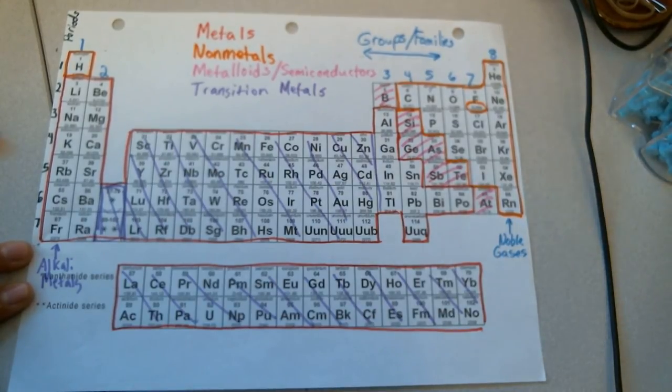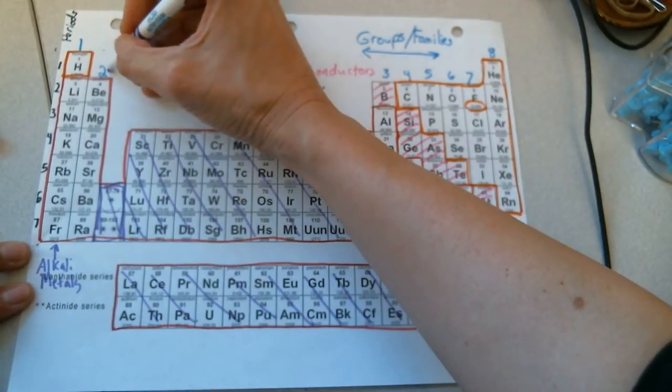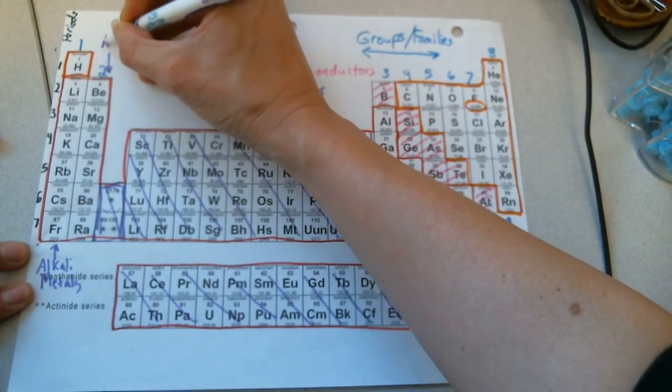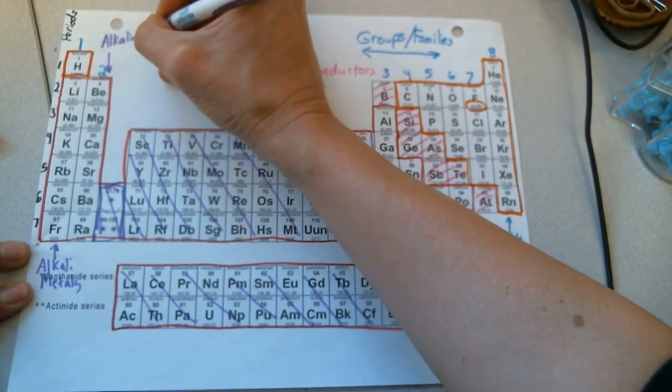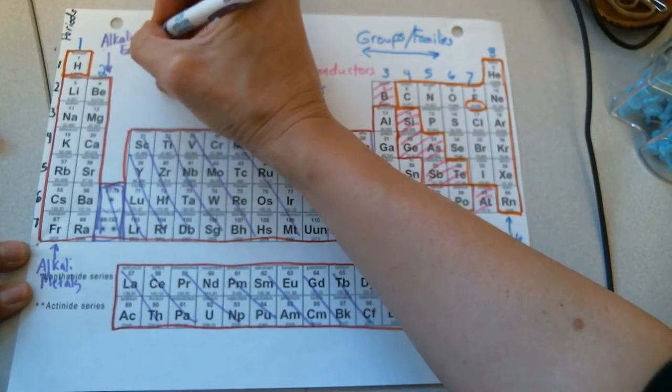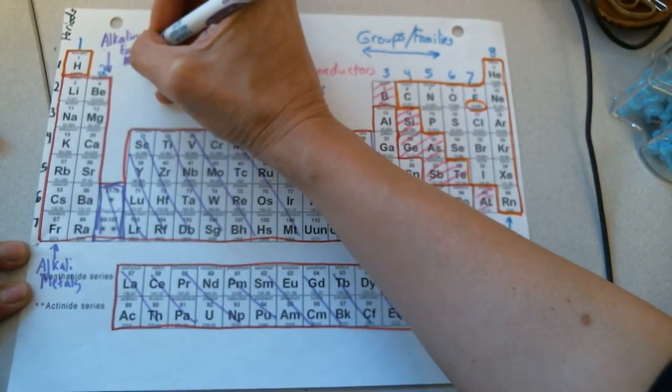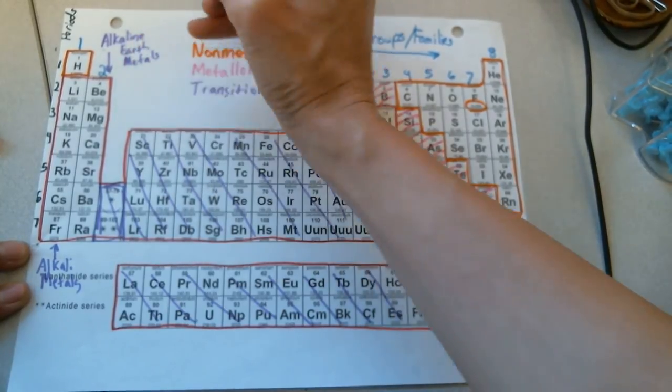Next to the alkali metals are the alkaline earth metals. This is group 2. I'm going to label it above. Alkaline earth metals. And these are still very reactive but not quite as reactive as the alkali metals.